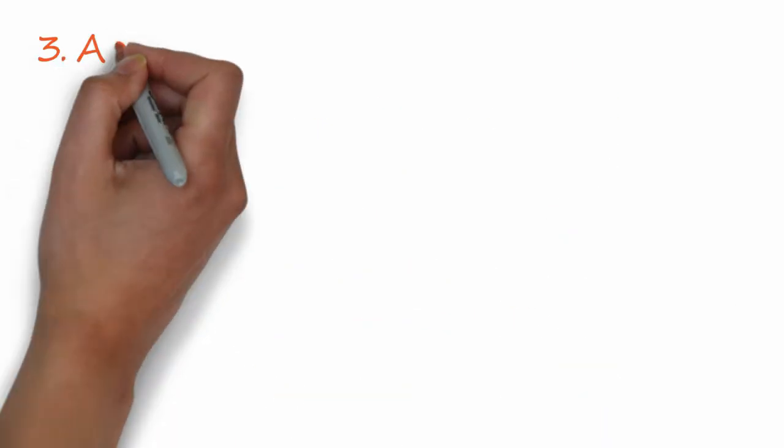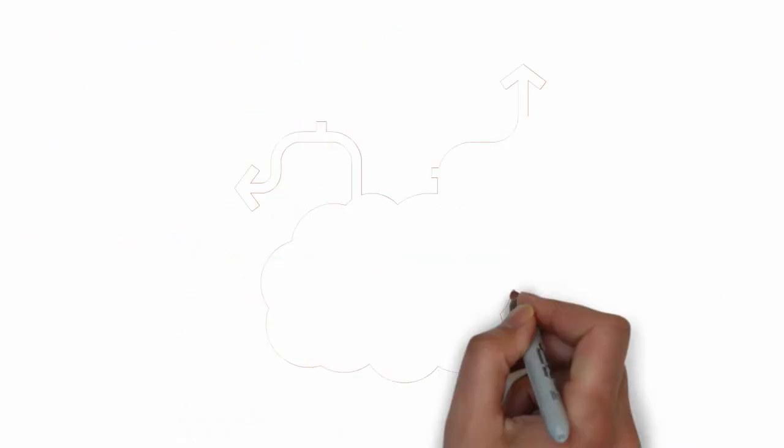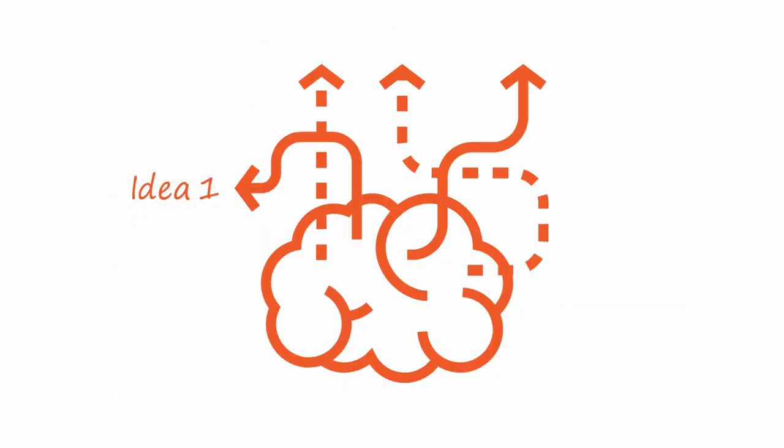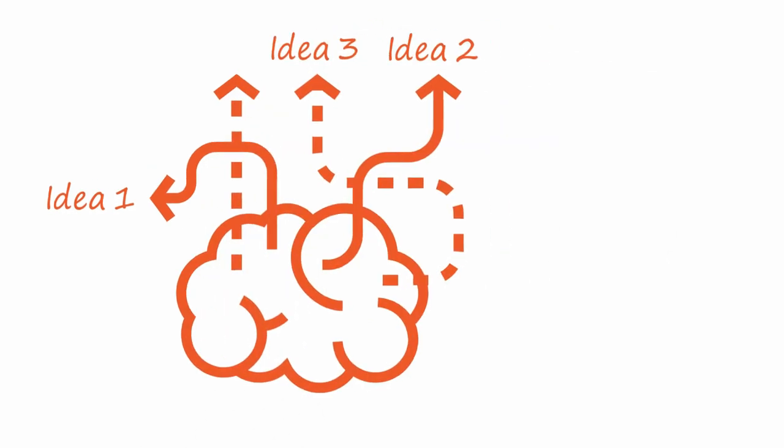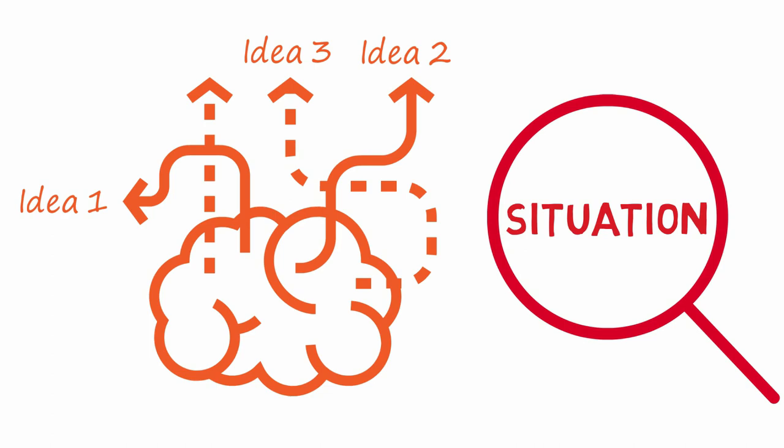Third, you can also apply some simple techniques. You assume that the crowd is wrong and ignore their opinions. Then, apply brainstorming to find out as many ideas as you can. And you can have the situation under control and reduce bandwagon effect.